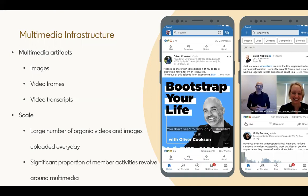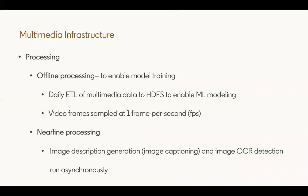A significant portion of this content is shown to members on the site or app. Offline processing is predominantly used to generate datasets for model training, along with model training itself. This includes a daily ETL of image and video data to HDFS to enable modeling. Frames are sampled at one frame per second for this purpose.